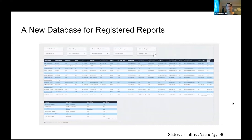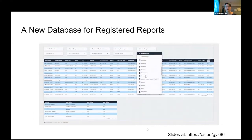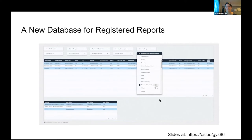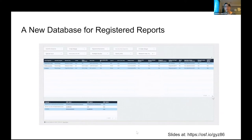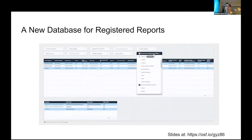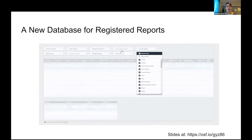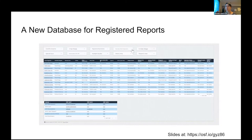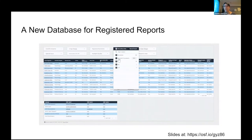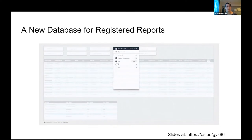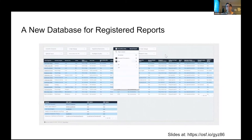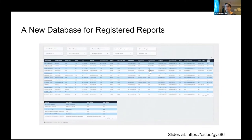Our team has created a database where you can search by research area — journals are classified by field, so you can filter out irrelevant ones. You can also filter by impact factor, whether they accept replications or secondary data, and whether they're running a special issue. We're still building this tool, so if there are fields you'd like added as filters, feel free to reach out.